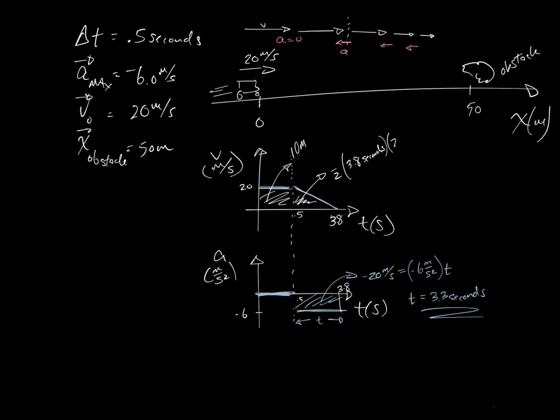It's a triangle, so one half, the base is 3.8 seconds, and the height is 20 meters per second. So you can see how the seconds are going to cancel out. And let's see what I get. One half of 20 is 10, so that's like 38.